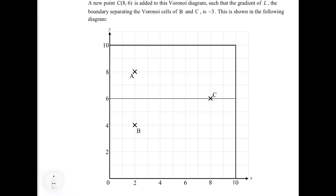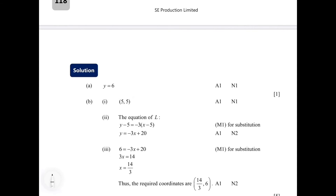The bisector must also pass through the midpoint of AB. From the diagram, the midpoint is located at (2, 6), so the y-coordinate of the midpoint is 6. The perpendicular bisector is a horizontal line passing through (2, 6). For a horizontal line, the format is y equals a number, and that number is the y-coordinate of any point on the line. So the equation is y = 6.